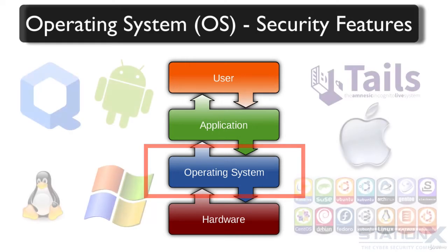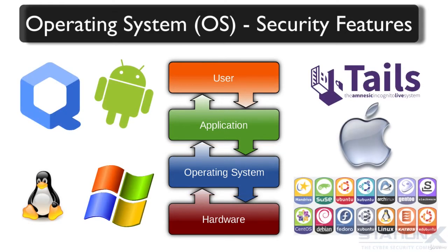Examples of desktop operating systems include Windows 7, 8, and 10. Also Mac OS, Debian Linux, Ubuntu Linux, BSD, Solaris, etc.